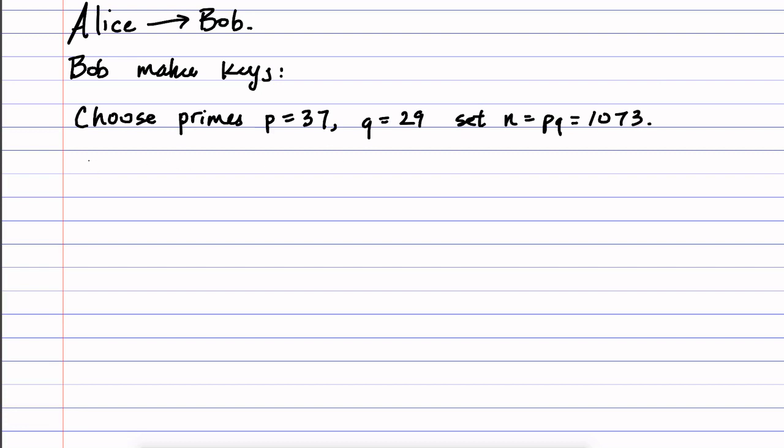Now the next thing he needs to do is calculate phi of n, so that's Euler's phi function. And since we have a formula for phi of n when n is the product of two primes, all we need to do is plug it in and it's 37 minus 1 times 29 minus 1, which works out to be 1008.